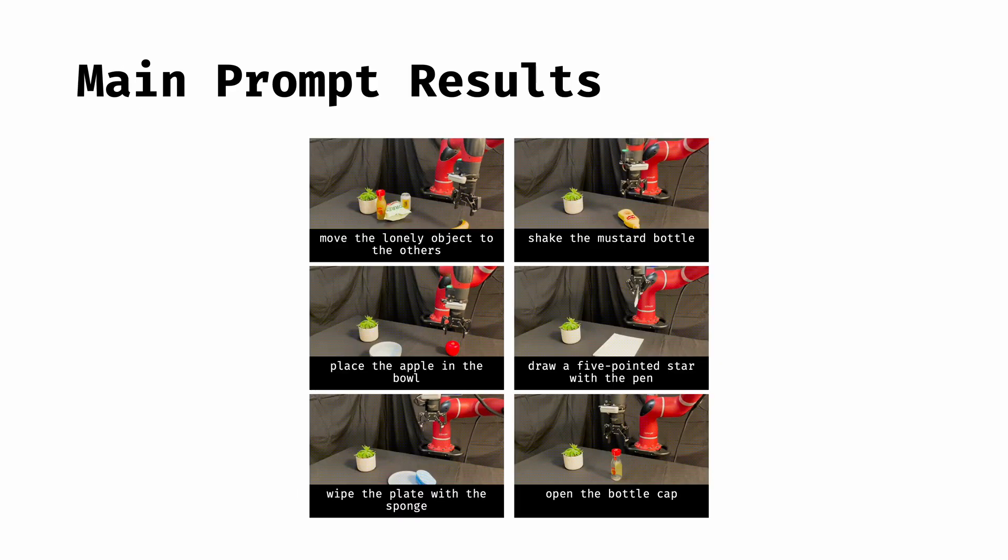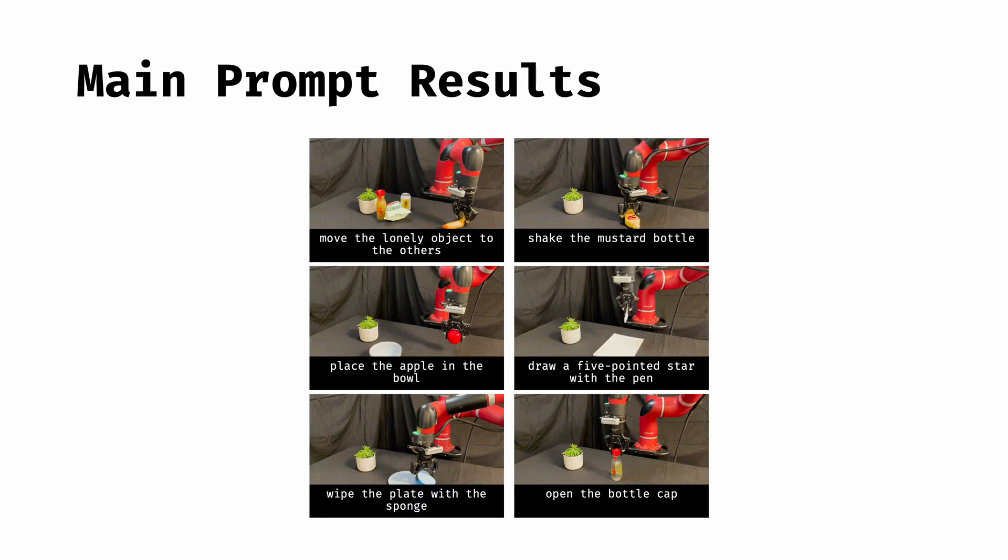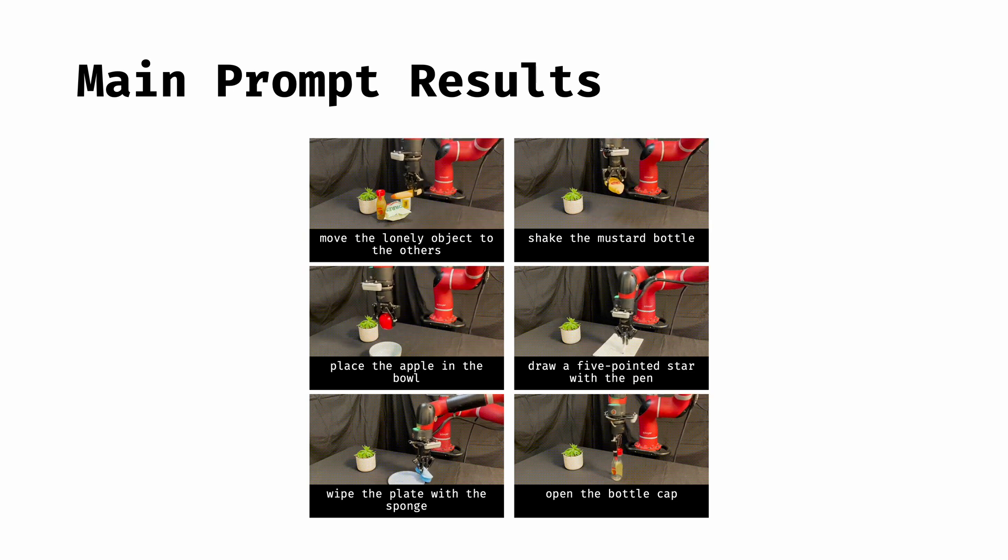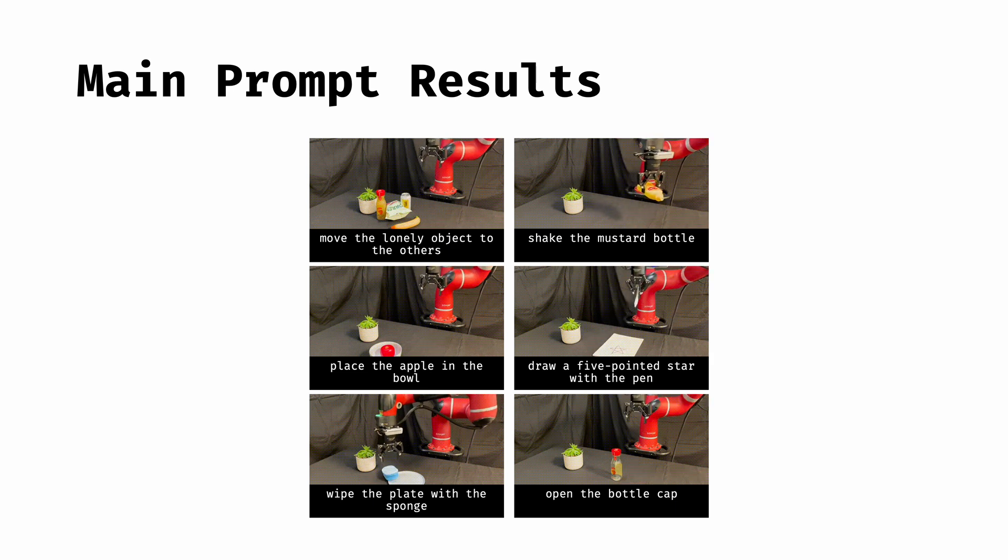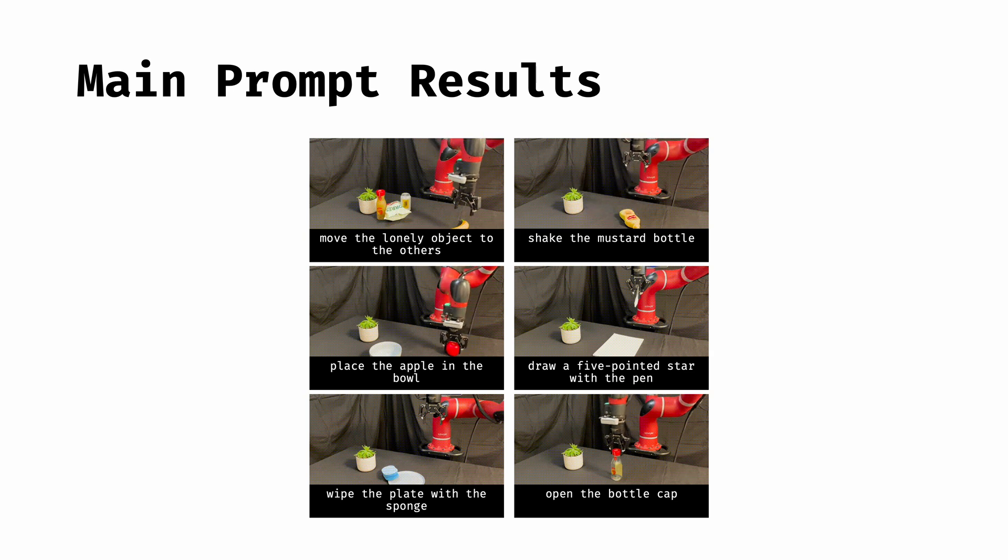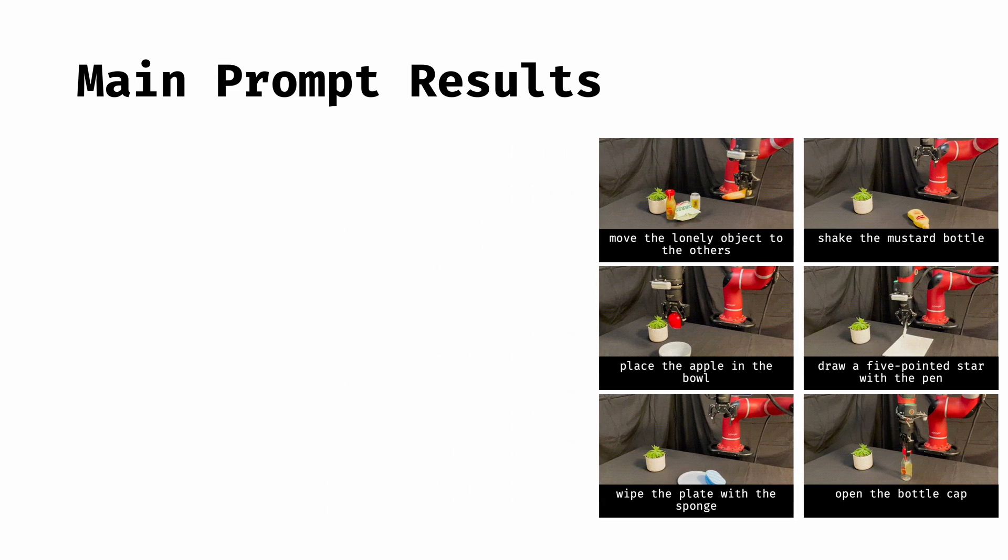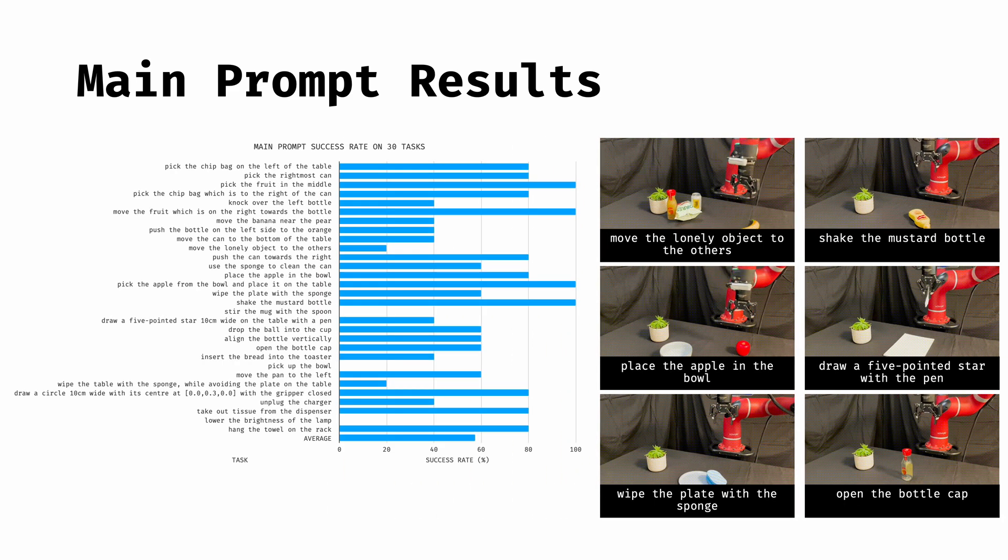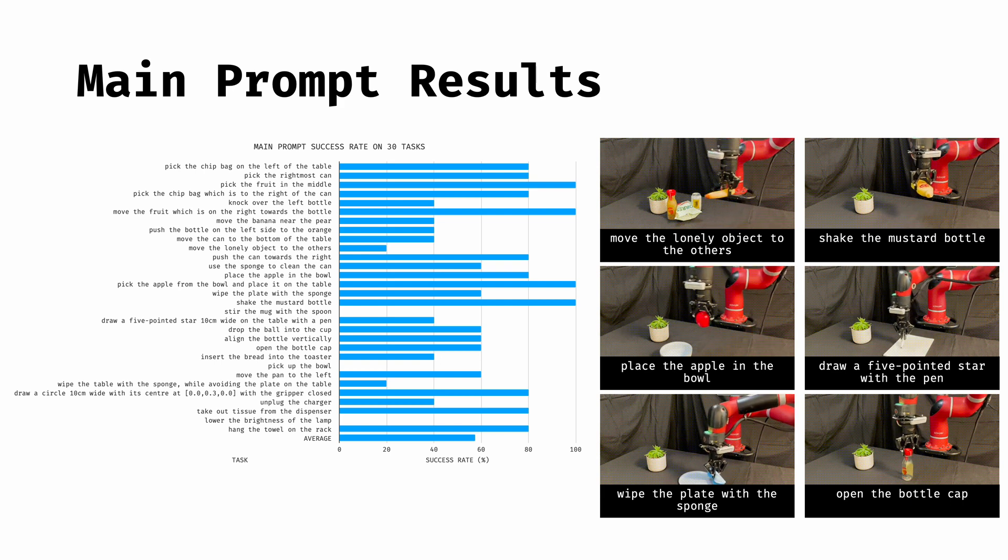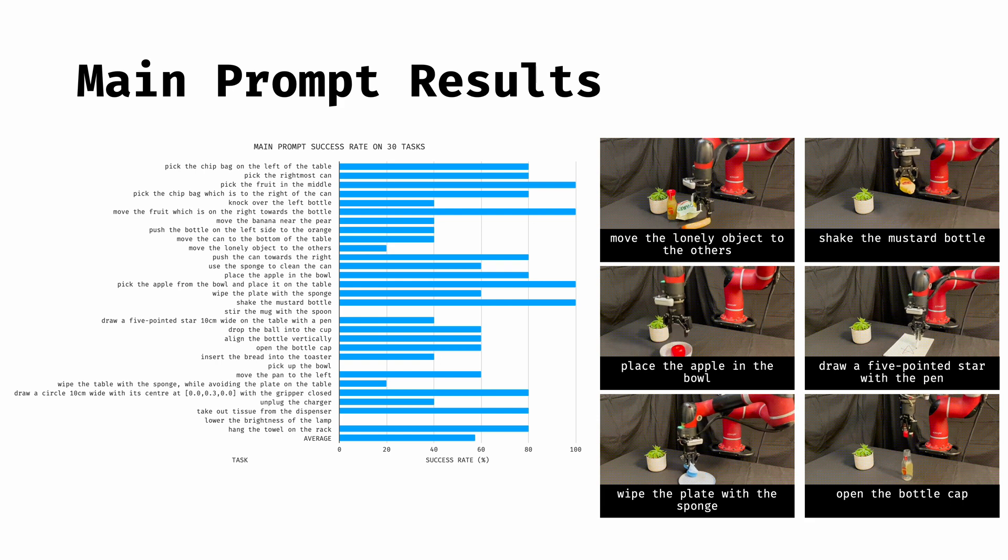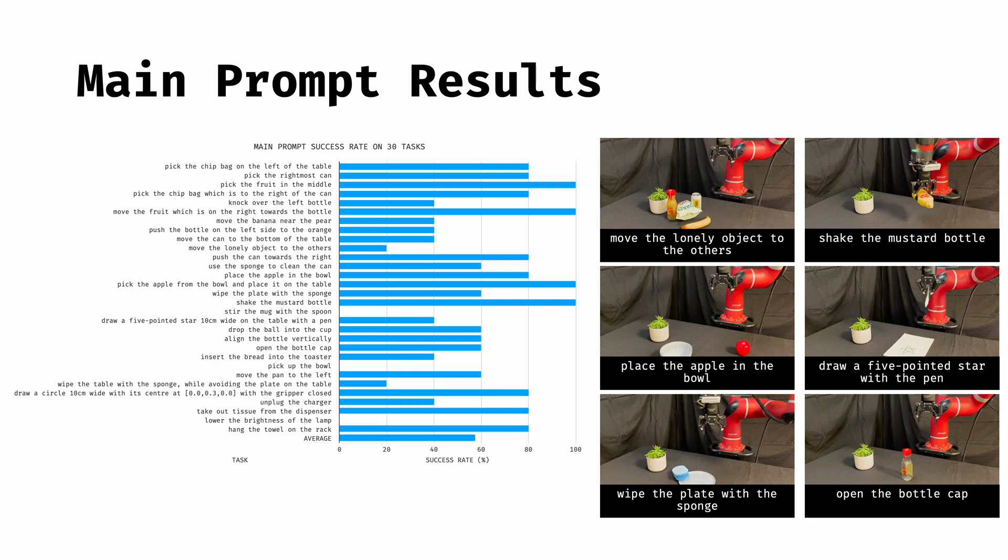We evaluate the main prompt across 30 real-world language-based manipulation tasks, and some example videos are shown here. And with the full results on the 30 tasks, we reveal for the first time that LLMs do indeed possess an understanding of low-level robot control, sufficient for a range of common tasks, achieving an average success rate of 57.3%.